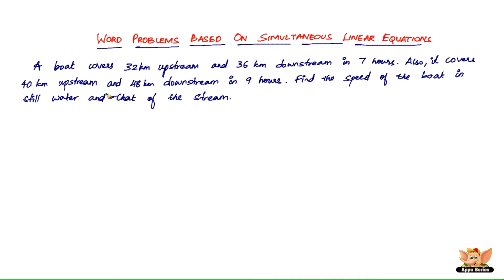Before we get into the problem, we need to discuss upstream and downstream. When you're traveling downstream, you don't only have your speed — you also have the speed of the river carrying you. So when you're going downstream, you go faster than your actual speed because the water is also going in that direction. It's like traveling on a steep road downwards — the speed is more.